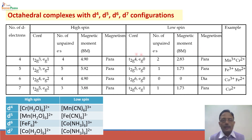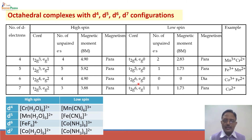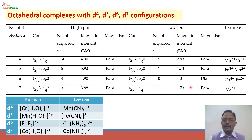In the low spin complex for d4, electrons are paired up in the lower orbital, leaving only two unpaired electrons and a magnetic moment of 2.83 BM. For d5 low spin (t2g⁵), all five electrons are in t2g with only one unpaired electron, giving 1.73 BM. For d6 low spin (t2g⁶), all six electrons are paired and there is no unpaired electron, so the magnetic moment is zero and the substance is diamagnetic. For d7 low spin, there is one unpaired electron in eg, giving 1.73 BM. Most are paramagnetic except d6 low spin.